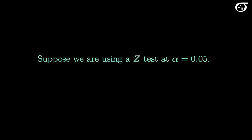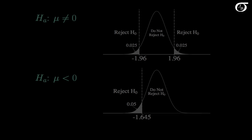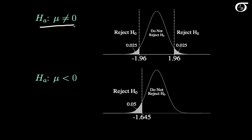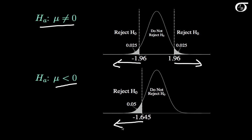Suppose we are carrying out this test using a z-test at an alpha level of 0.05. If we use a two-sided alternative hypothesis, then we're going to reject the null hypothesis if we get a z value that is less than or equal to -1.96, or greater than or equal to 1.96. If on the other hand we choose the one-sided alternative, then we are putting the entire alpha value in the left tail and reject the null if the z value is less than or equal to -1.645.